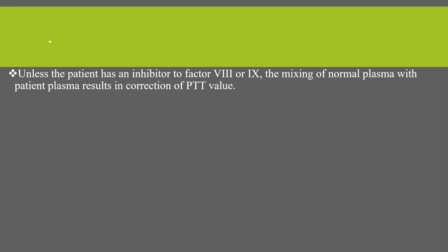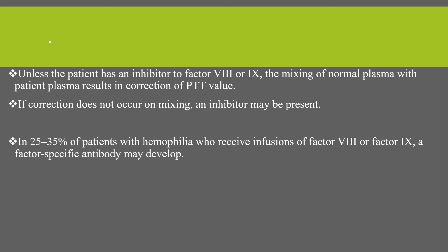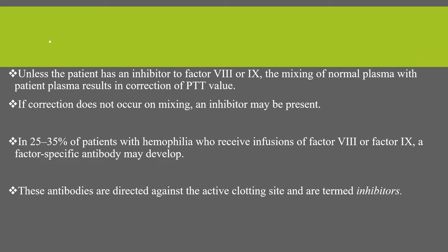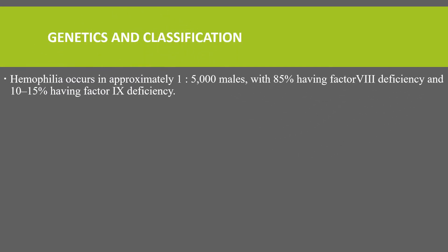Unless the patient has an inhibitory antibody to factor 8 or 9, mixing normal plasma with the patient's plasma results in correction of the PTT value. If correction does not occur on mixing, it indicates inhibitor development. In 25 to 35 percent of patients with hemophilia who receive infusions of factor 8 or 9, a factor-specific antibody may develop. These antibodies are directed against the active clotting site and are termed inhibitors. A quantitative Bethesda assay for inhibitors should be performed to measure the antibody titer.